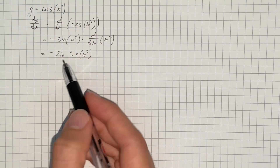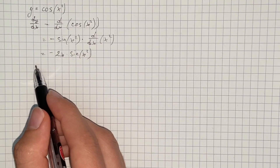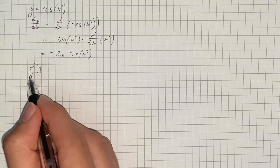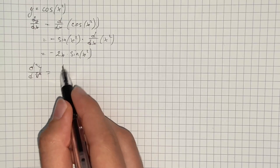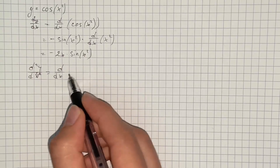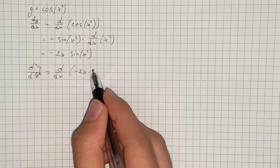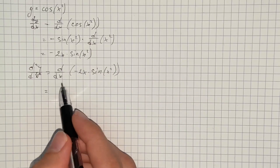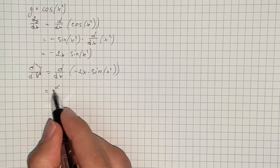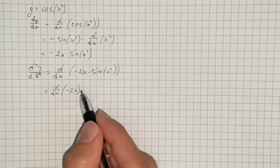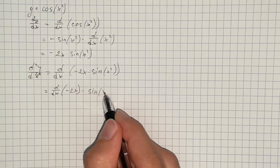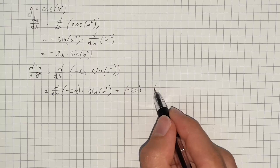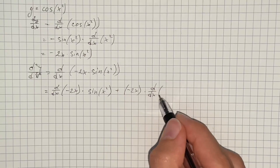Then we're going to differentiate again to find the second derivative. We take the derivative with respect to x of negative 2x times sine of x squared, and here we're going to use the product rule: we take the derivative of the first term and multiply by the second term, then add the first term times the derivative of the second term.